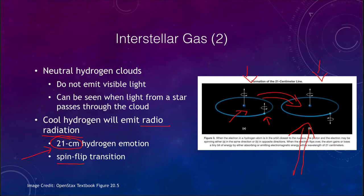That 21 centimeter emission can then be detected by a radio telescope. Because it is a very long wavelength radio wave, it does not take much energy to produce, so even these cool dark clouds can give it off and allow us to detect them — even though they would otherwise be completely invisible. The 21 centimeter line therefore allows us to map the hydrogen within our galaxy, even though we can't see it directly with an optical telescope.